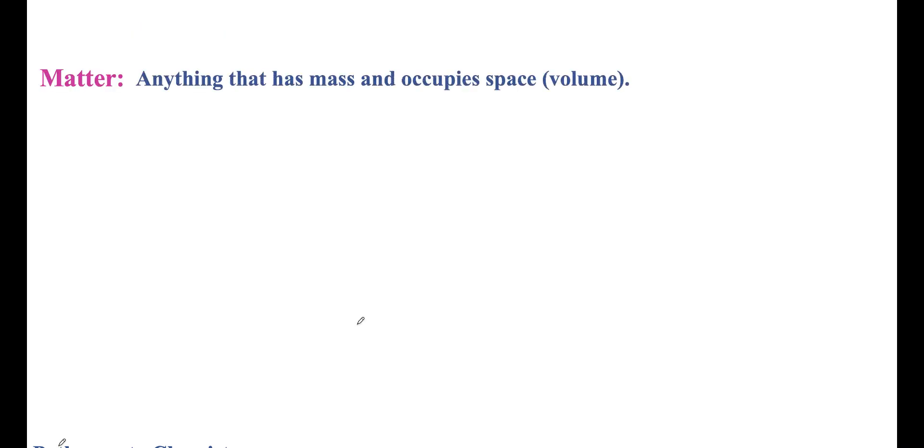What is matter? It's anything that has mass and occupies space or volume. Plants, water, people, hair, air, trees—these are all examples of matter. Again, anything that has mass and occupies space is considered matter.